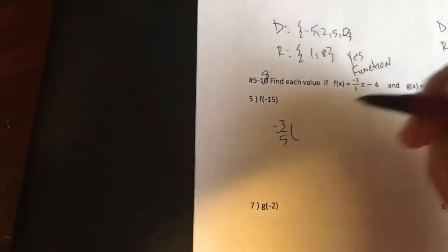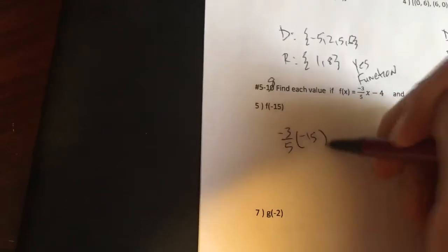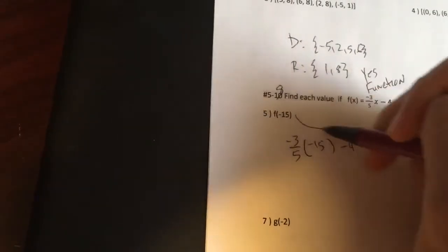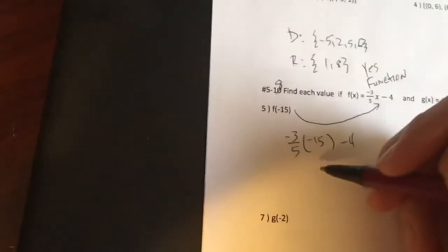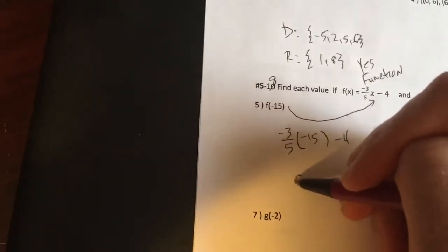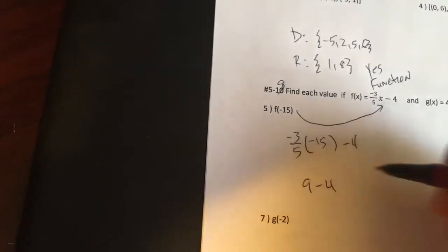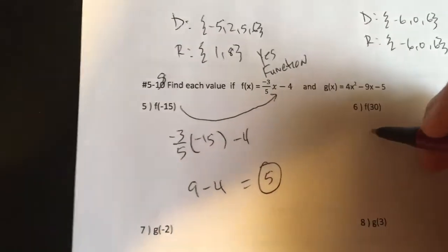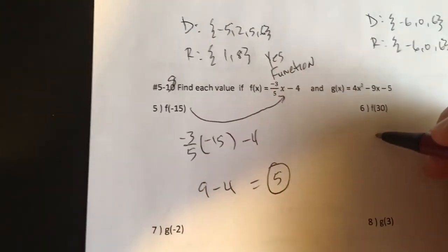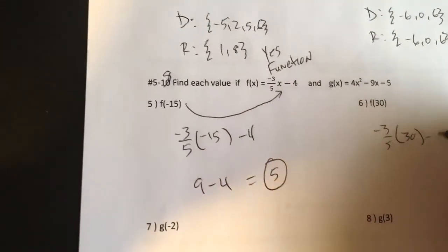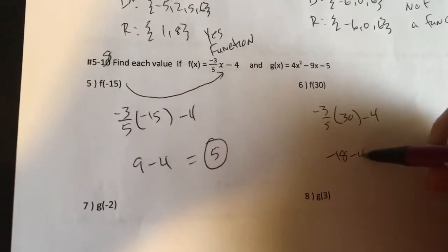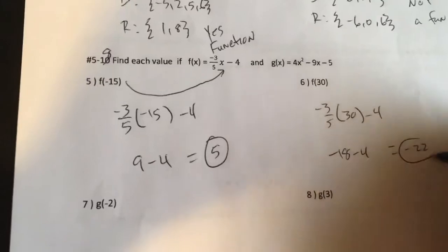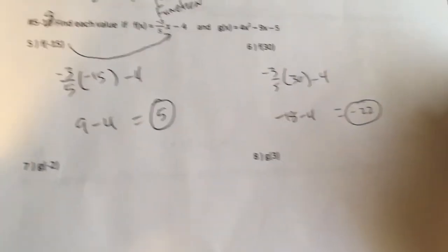Negative 3 fifths times negative 15 minus 4. I'm plugging in negative 15 in for x right there. Negative times negative is positive. 3 fifths of 12. Brought to you by TI 84 Silver edition is 9. 9 minus 4 is 5. All right. F of 30. I'm going to plug 30 in for x in the equation that says f of x.